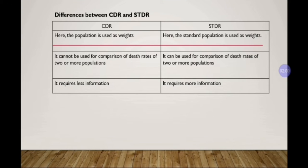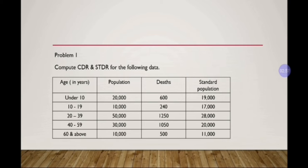Now the difference between crude death rate and standardized death rate. In CDR, the actual population is used as weight, whereas in STDR, the standard population is used as weight. CDR can only be used for single population comparison, but STDR allows comparison of two or more populations. CDR requires less information, while STDR requires more information.